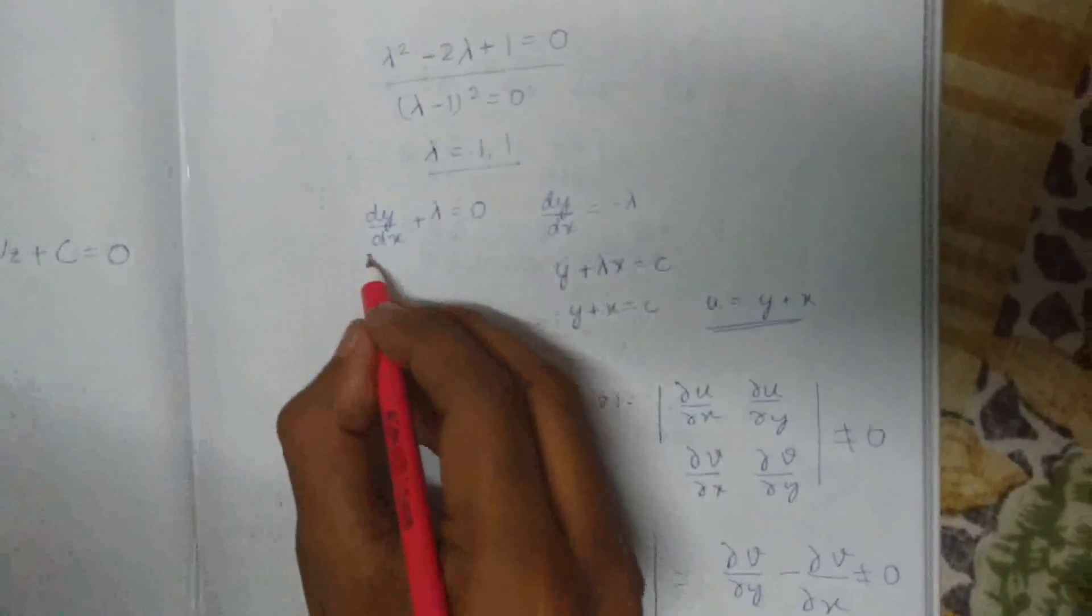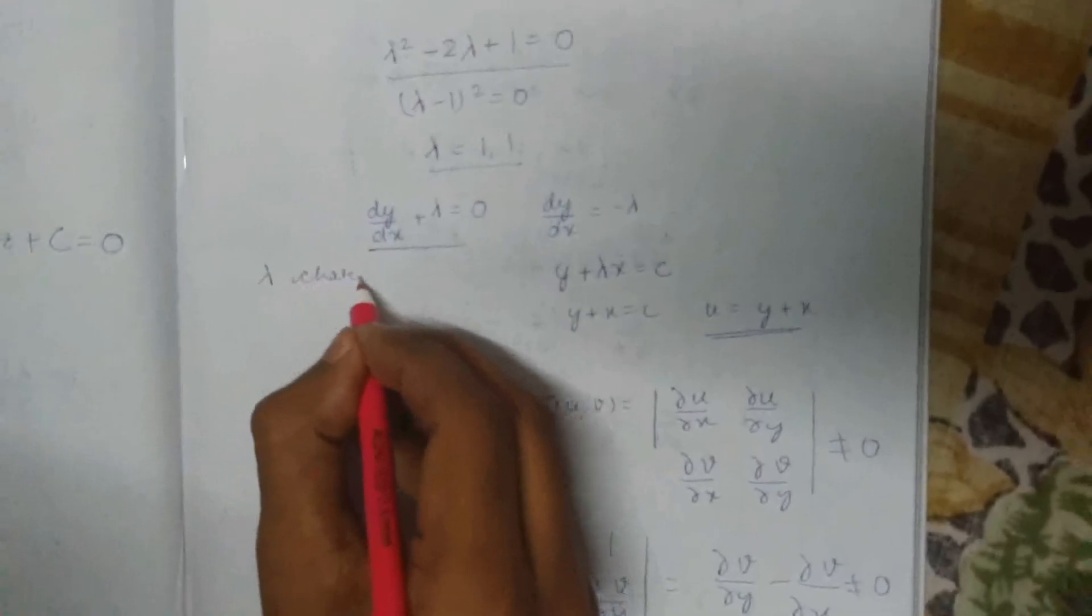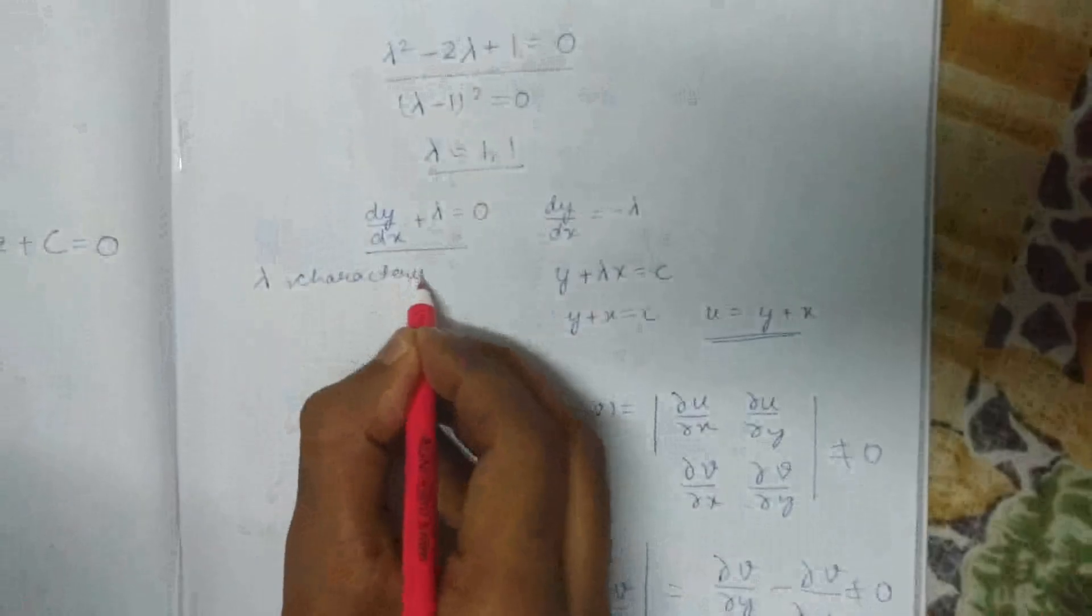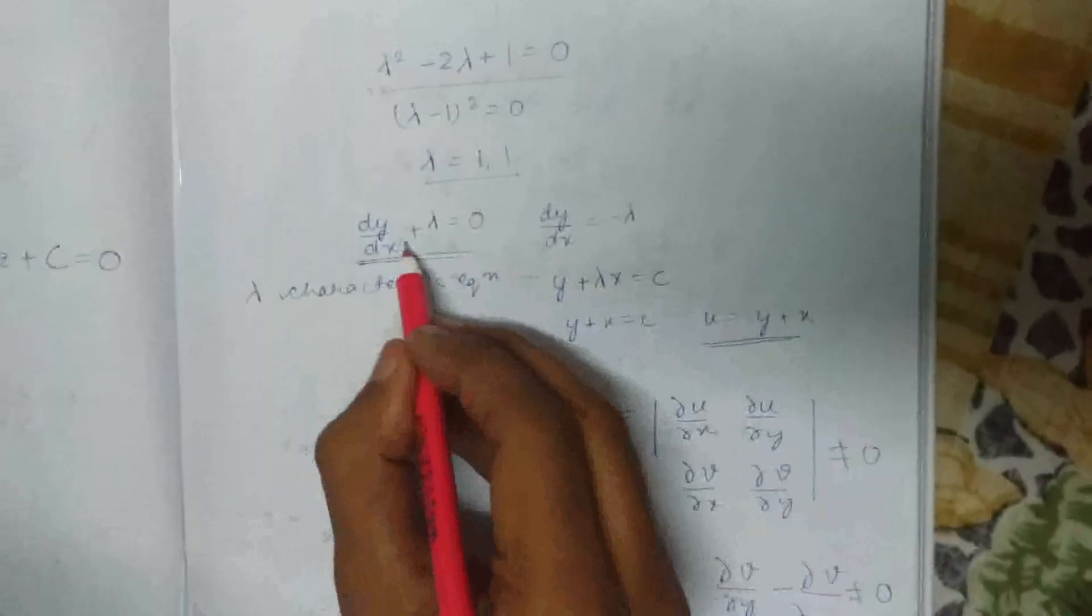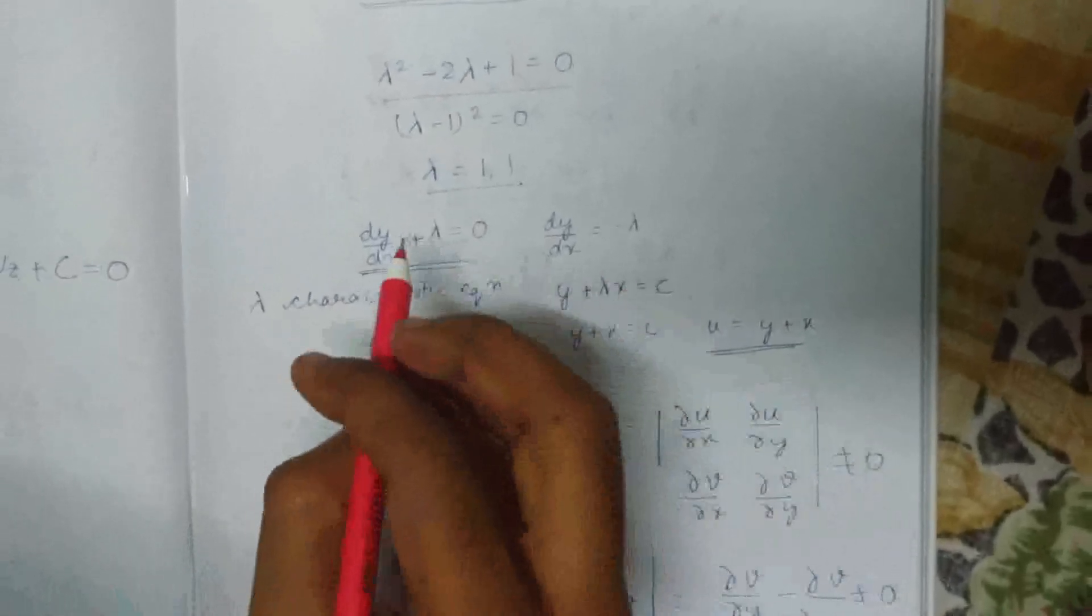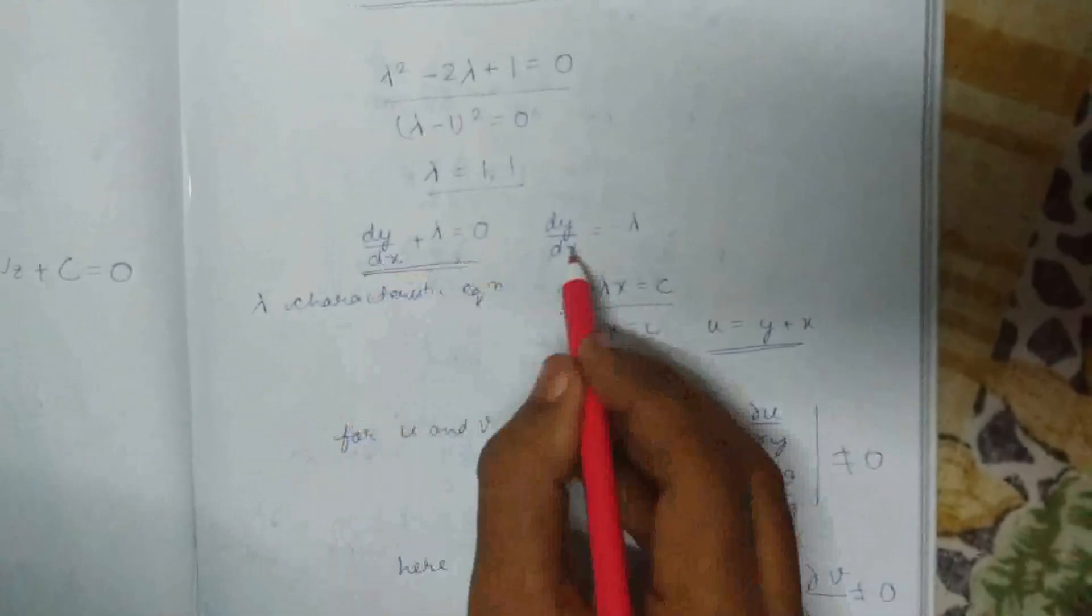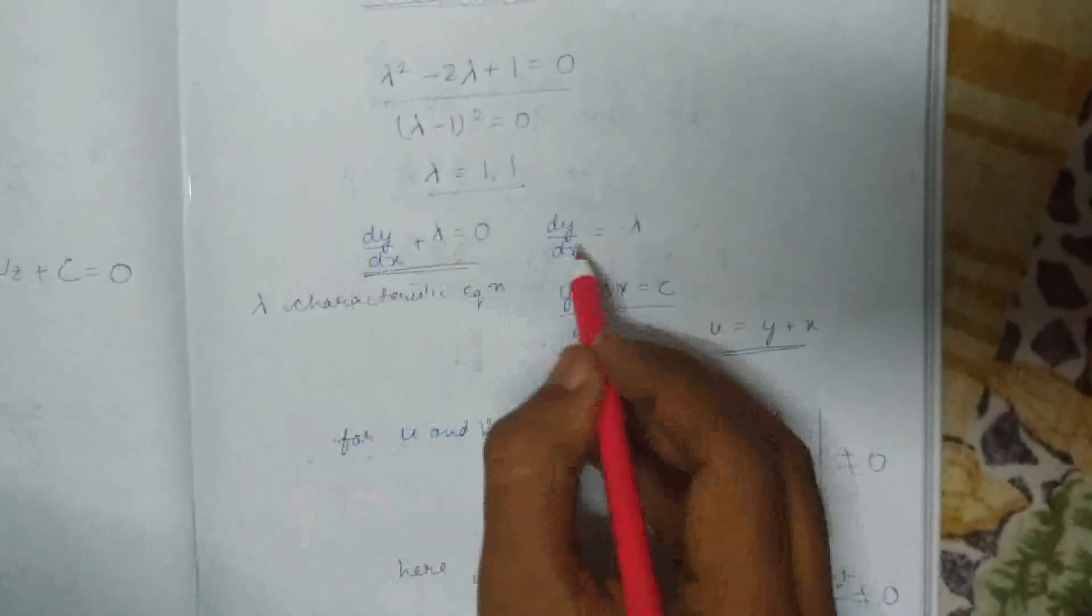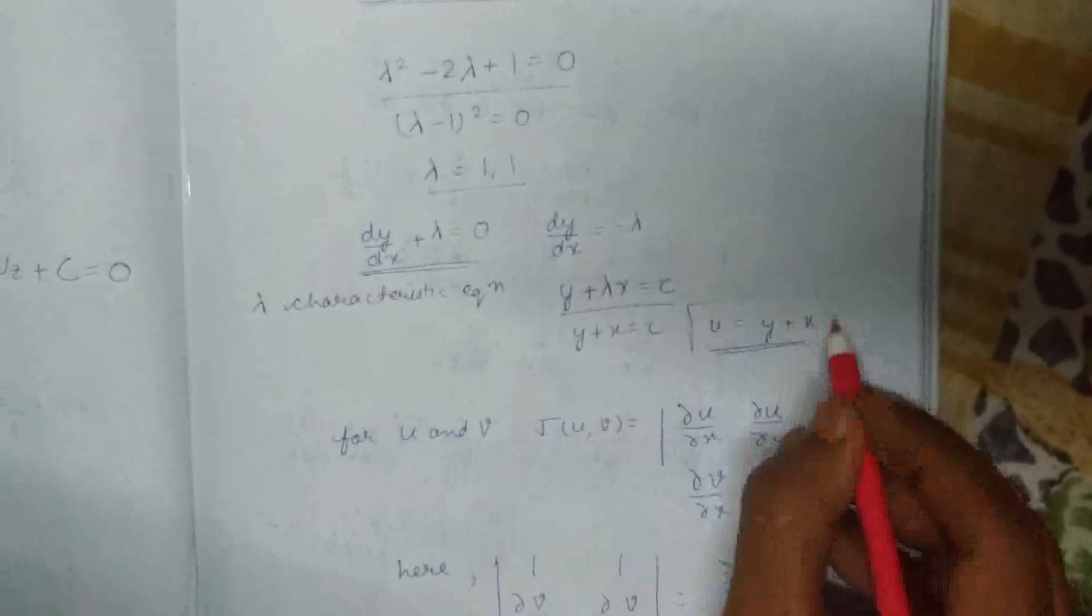So we find the lambda characteristics equation. This is called lambda characteristics equation, and this is what we obtain from this. You can solve it easily, and this is the value of U you get from solving this.